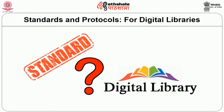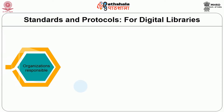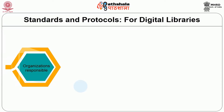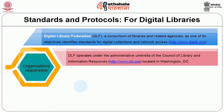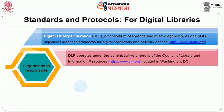There are organizations responsible for setting digital library standards. One example is DLF — the Digital Library Federation — a consortium of libraries and related agencies. One of its objectives is to identify standards for digital collections and network access; you can visit diglib.org. The DLF operates under the administrative umbrella of the Council of Library and Information Resources, based in Washington D.C. Another important body is the Library of Congress, which plays an important role in maintaining several key standards.